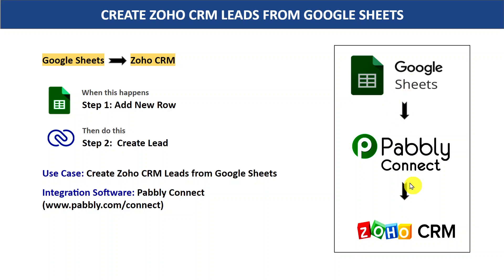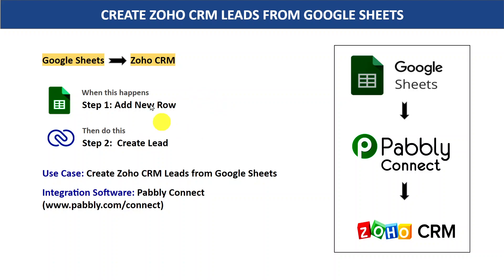Now Google Sheets and Zoho are two different applications and there is no direct connection between them. That's why we are going to integrate both of these applications with the help of an integration software — that is Pably Connect — so that whenever a new row is added in Google Sheets, Pably Connect will automatically create a lead in Zoho CRM. And the best part is this process requires no coding knowledge, and any non-technical person can do this easily.